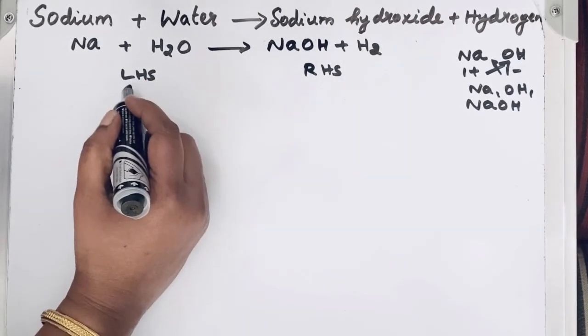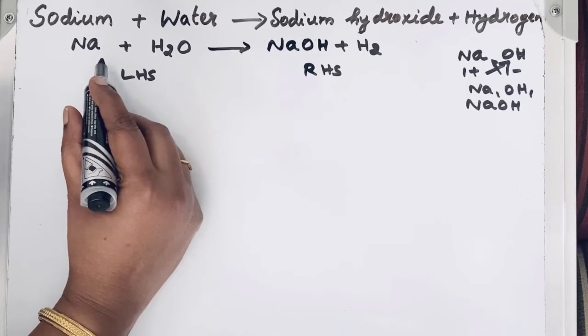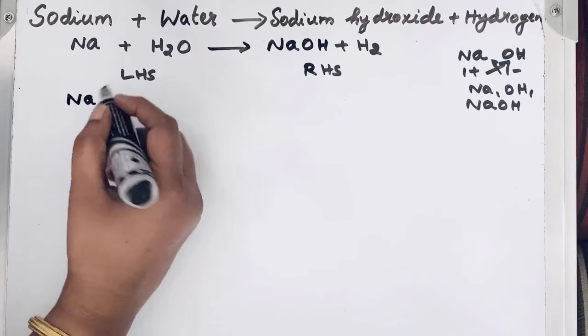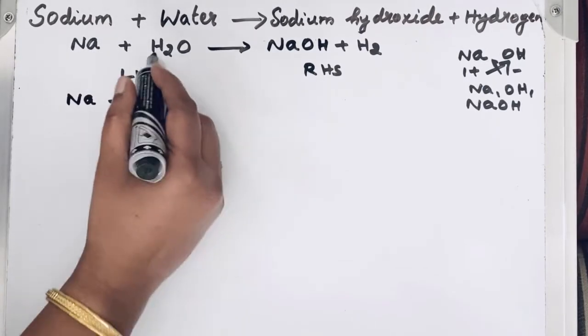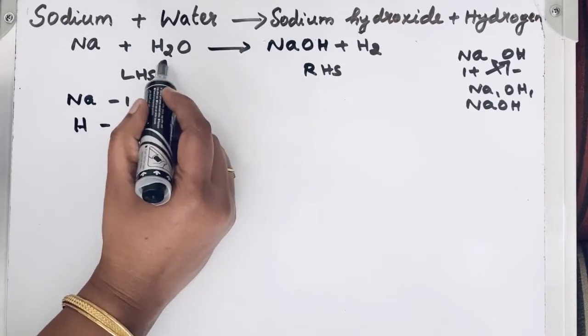So in left hand side, we are going to write number of atoms of elements 1 by 1. So let us write first Na, number of atoms, only 1. For hydrogen, we have 2 atoms.